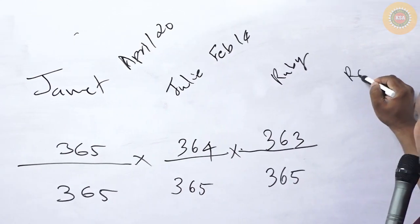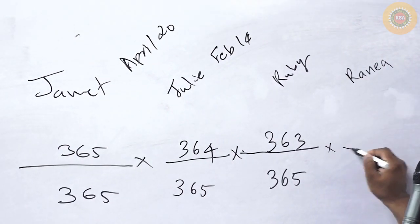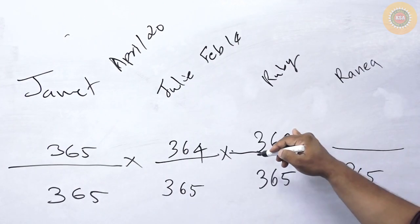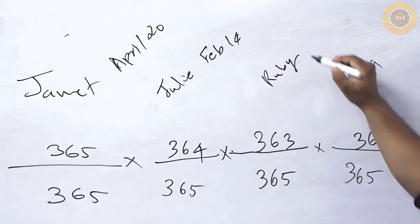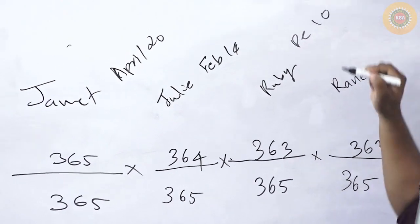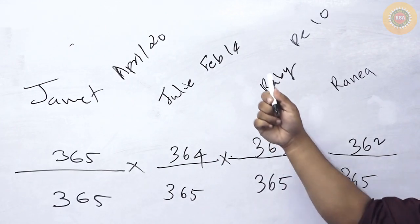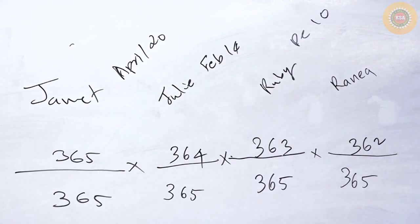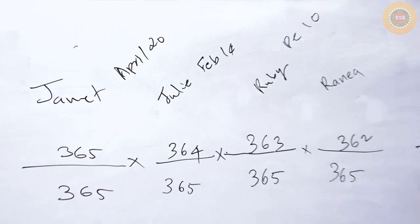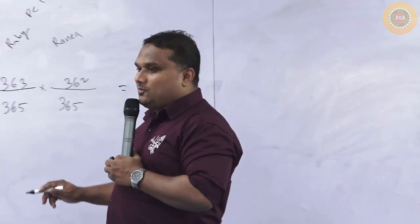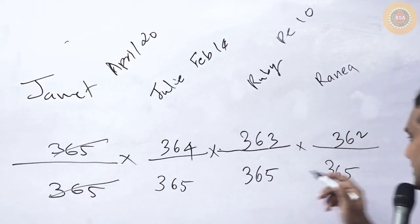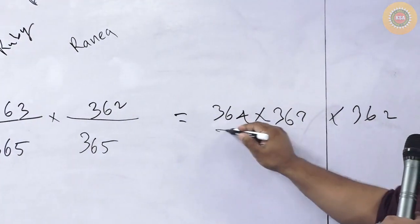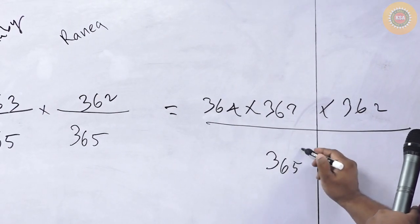The fourth person is Rania. Rania's birthday among the 365 days — other than the three already taken days — there are 362 possibilities. Suppose this person's birthday is December 10th. The fourth person's birthday should not be on any of those three days. The textbook cancelled these and made it 364 × 363 × 362, divided by 365 to the power 3.